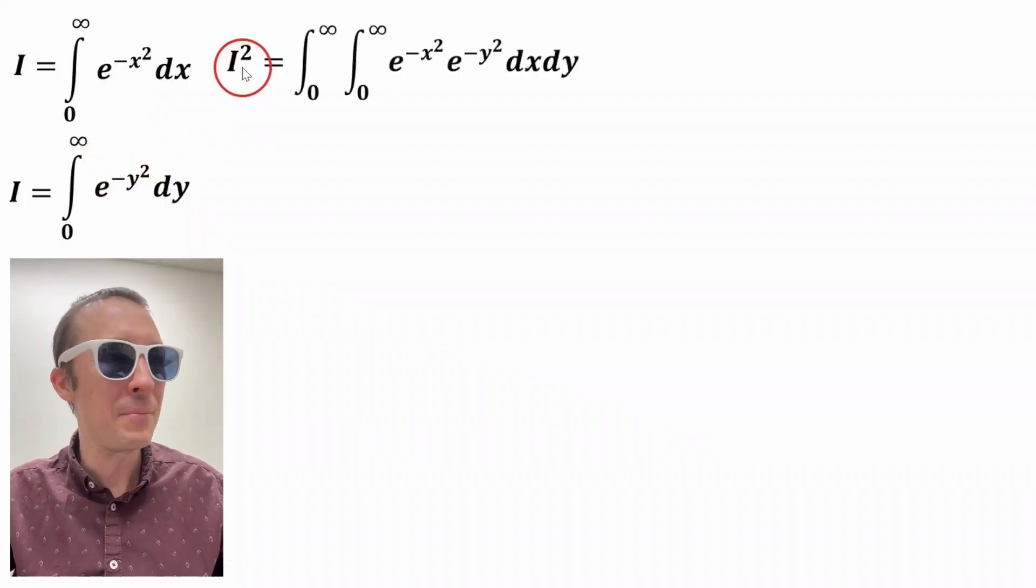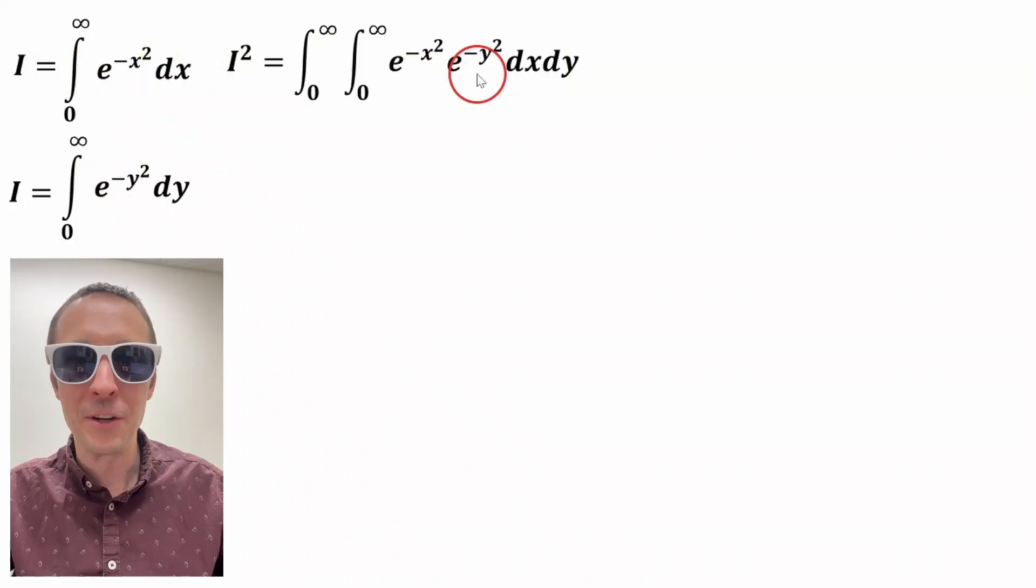So the left hand side becomes I squared. And this is the right hand side. It's just these two multiplied together with a little bit of rearrangement.